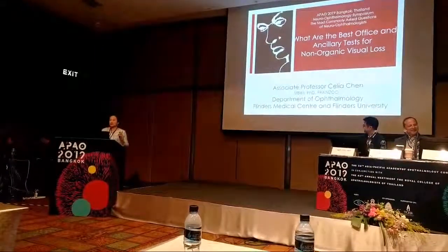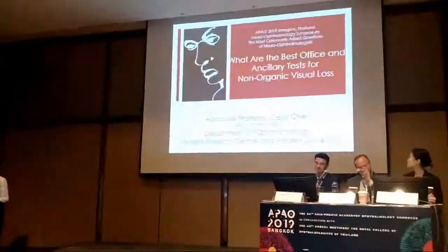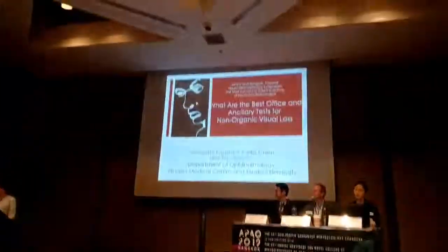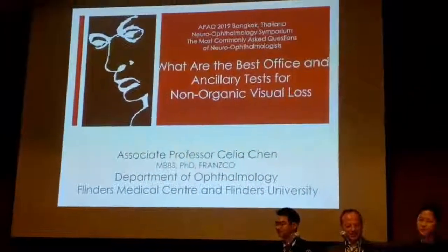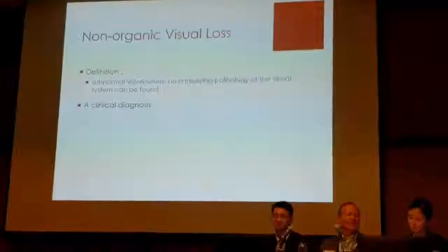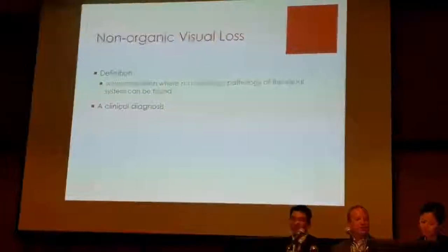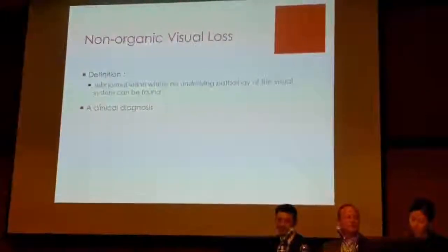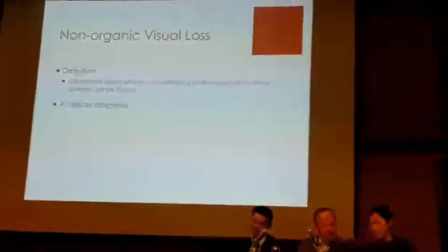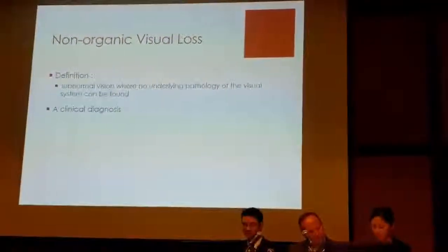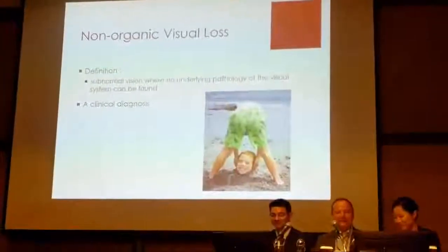In a lot of these situations, we just have to see that things may not be what they appear. The definition is that functional visual loss is subnormal vision when no underlying pathology can be found. It is a clinical diagnosis, and importantly, it is not a diagnosis of exclusion because you actually have to actively demonstrate that the vision is better than what it appears to be.